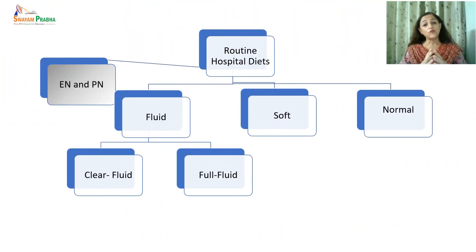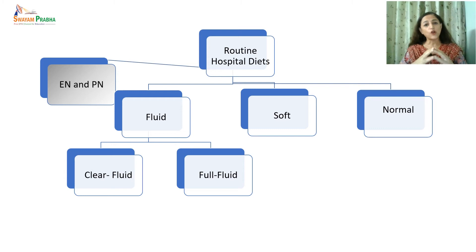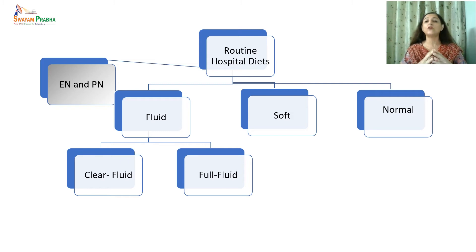Hospitals and healthcare institutions have basic routine diets. These routine hospital diets are broadly categorized into three categories: fluid, soft, and normal or routine diet. Let us study all these types of progressive diets in detail.